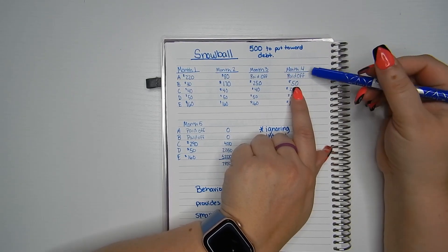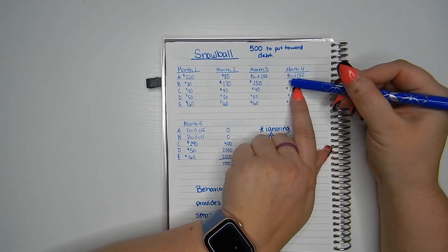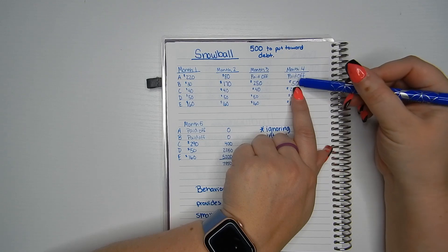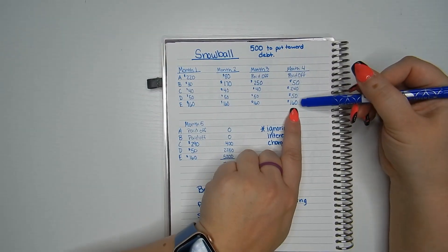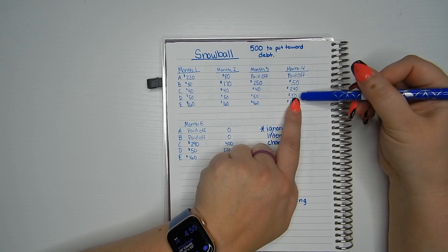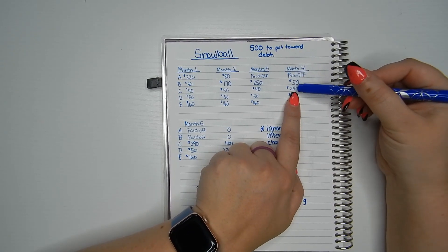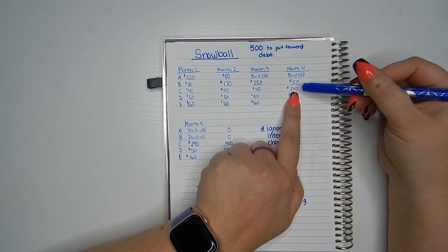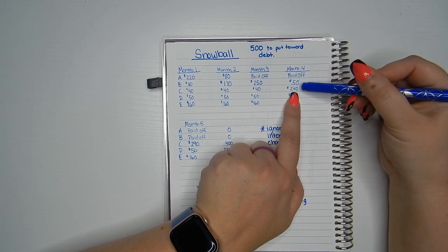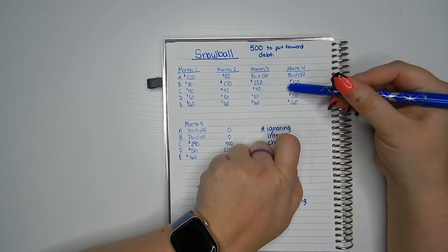A lot of paying off debt is behavior. It's not really about the numbers. So this way is more rewarding emotionally. Back to month four. I only have $50 left to pay on card B. So I'm going to pay that. I'm going to pay my minimum on E and D. And once I total that up and take that away from $500, I have $240 left to put towards card C.